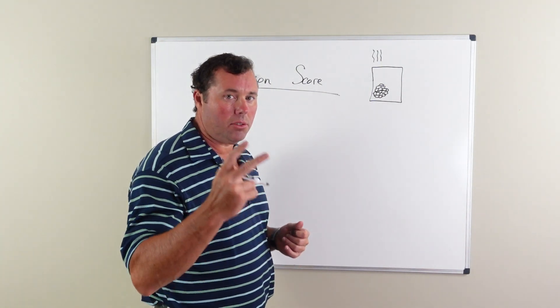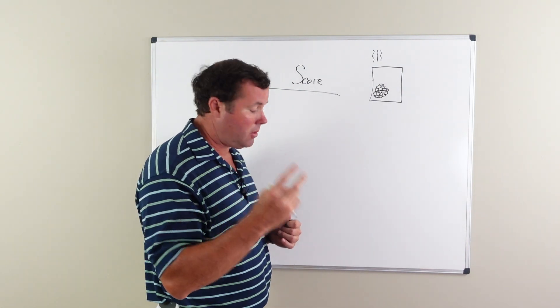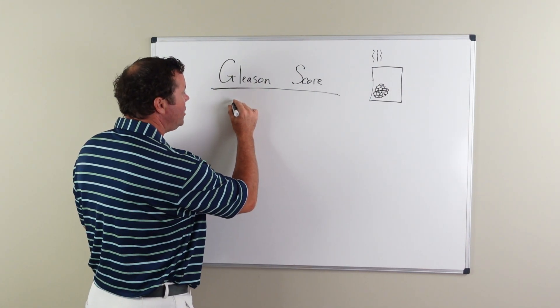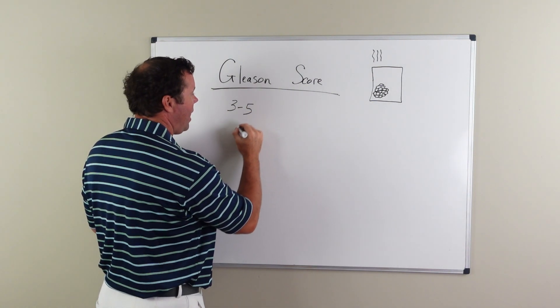Again, the Gleason score is a combination of two numbers ranging anywhere from three to five.